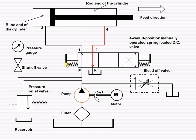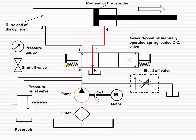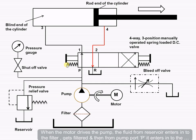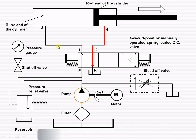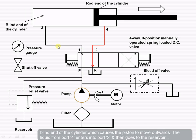Now, when the motor drives the pump, it causes the outstroke of the piston. The fluid from the reservoir enters into the filter, gets filtered, and then from port P it enters into the blind end of the cylinder. This will cause the piston to move outwards.